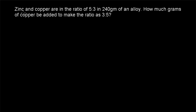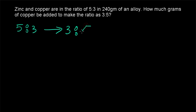Now let's see another example. Zinc and copper are in the ratio of 5 is to 3 in 240 grams of an alloy. How many grams of copper should be added to make the ratio 3 is to 5? An alloy is a combination of metals, so we have 240 grams consisting of zinc and copper in the ratio 5 is to 3, to be converted to 3 is to 5.